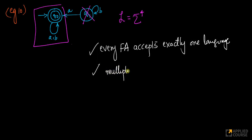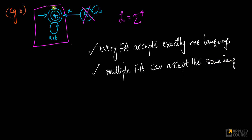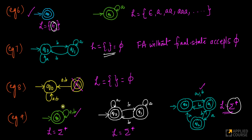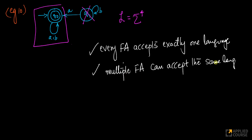The second aspect is: for a given language, multiple finite automata can accept the same language. For example, we saw multiple automata all accepting sigma star, and multiple automata all accepting the null set. Multiple finite automata can accept the same language — nothing stops that.